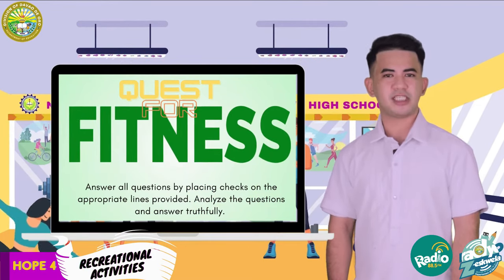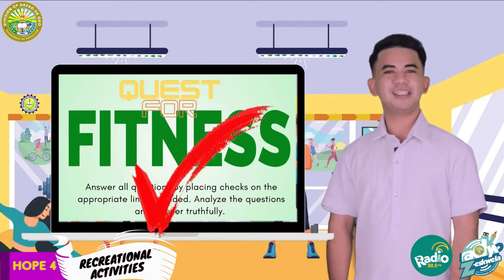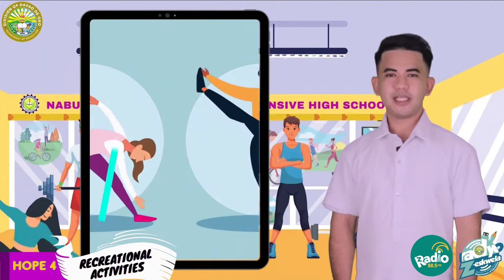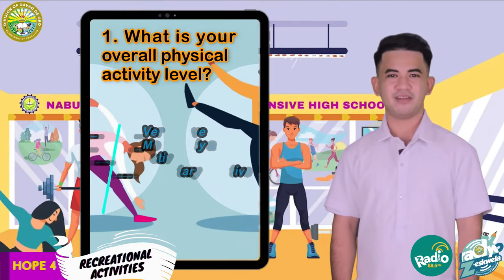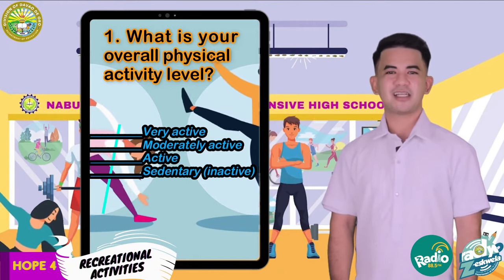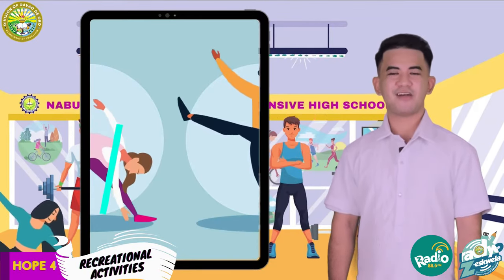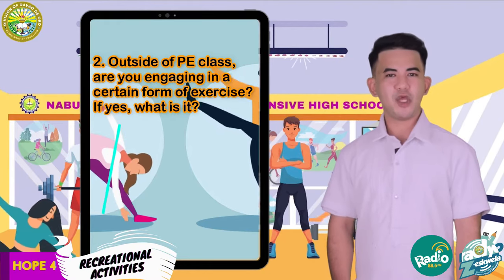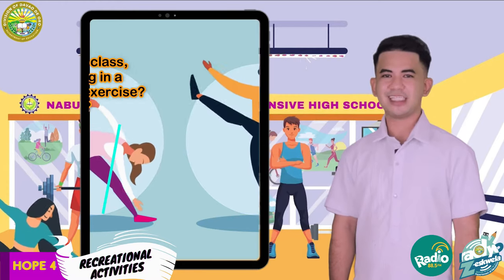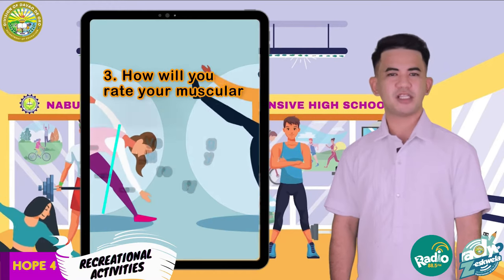Answer all questions by placing checks on the appropriate lines provided. Analyze the questions and answer truthfully. What is your overall physical activity level? Is it very active, moderately active, active, sedentary, or inactive? Outside of physical education class, are you engaging in a certain form of exercise? If yes, what is it? How will you rate your muscular strength or endurance level?